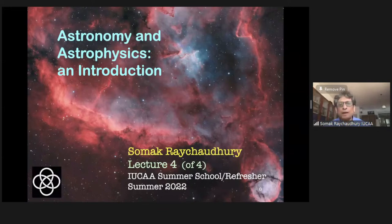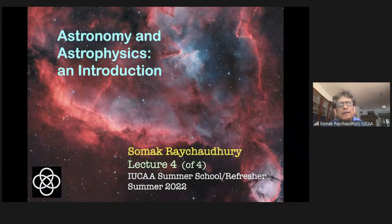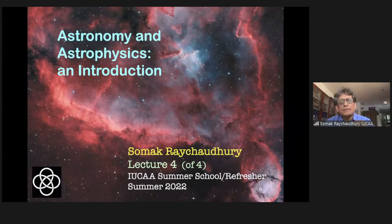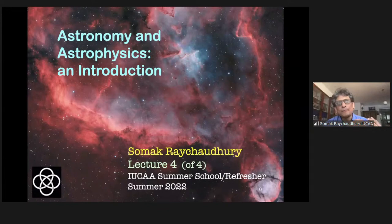Hi, thanks again for joining. Today is the fourth in the series of introductory lectures. Till yesterday we talked about the general way of looking at the sky and a general introduction to astronomy. Then we talked about how to measure things in the universe — measuring distances, then measuring mass. And in general, measuring distances leads to an issue in measuring masses in the universe, which leads to our knowledge of dark matter and dark energy. This is the substance of today's lecture.